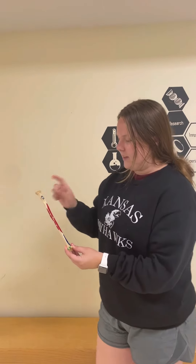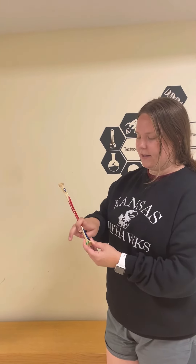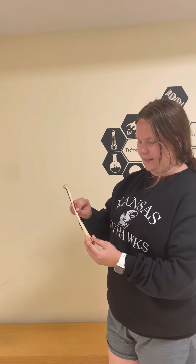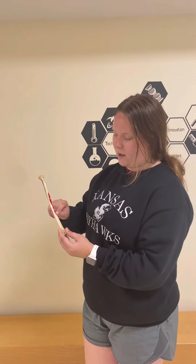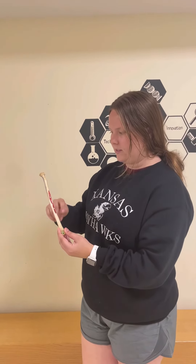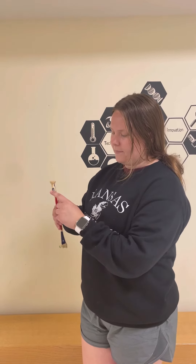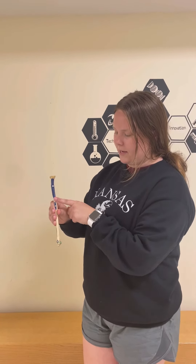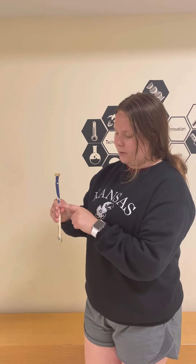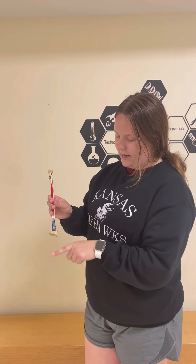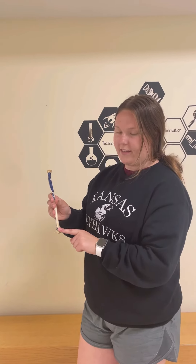This is the left radius. I'm going to start with the origins. This is the flexor pollicis longus, the abductor pollicis longus, and the extensor pollicis brevis. For the insertions, we have the biceps, the supinator, pronator teres, the pronator quadratus, and the brachioradialis.